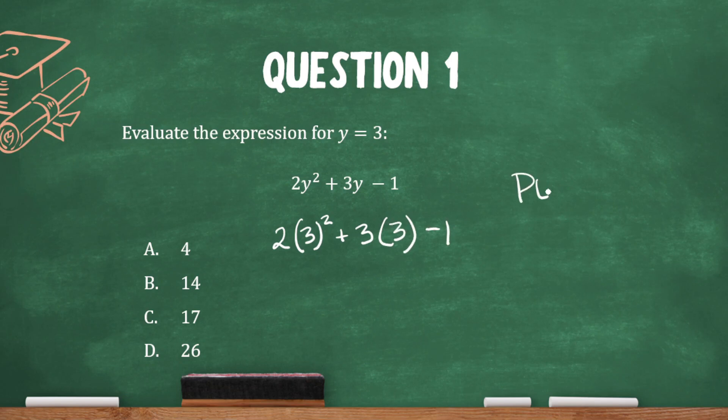All right, our order of operations tells us that we've got to deal with that exponent first. So let's go ahead and do it. 3 squared is 9. So we'll just write that over.